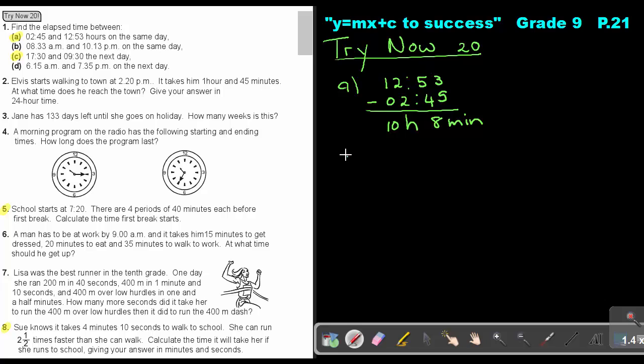But let's look at number C. 17:30 and 9:30 the next day. Now remember, this is already in the 24-hour clock. So basically, I can just say I'm going to take the 9:30, and I'm going to add the previous day, and that's the 24-hour. So if I add that, I'm going to get 33:30. So that's added the previous day.